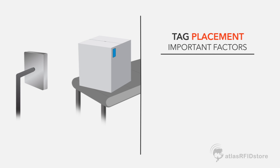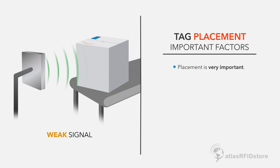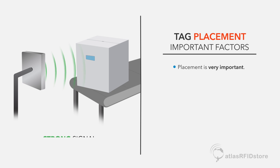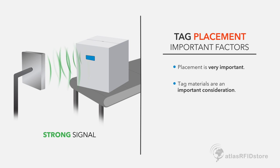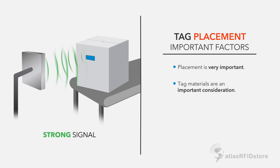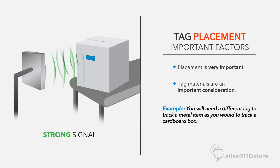The placement of the tag on the item you are tracking is also very important. You should spend some time understanding exactly where to place the RFID tag for optimal performance. Also, be aware of the material makeup of the surface that you are applying the tag to, because this will affect the type of tag that is needed for your application. For example, you will need a very different tag to track a metal item as you would a cardboard box.